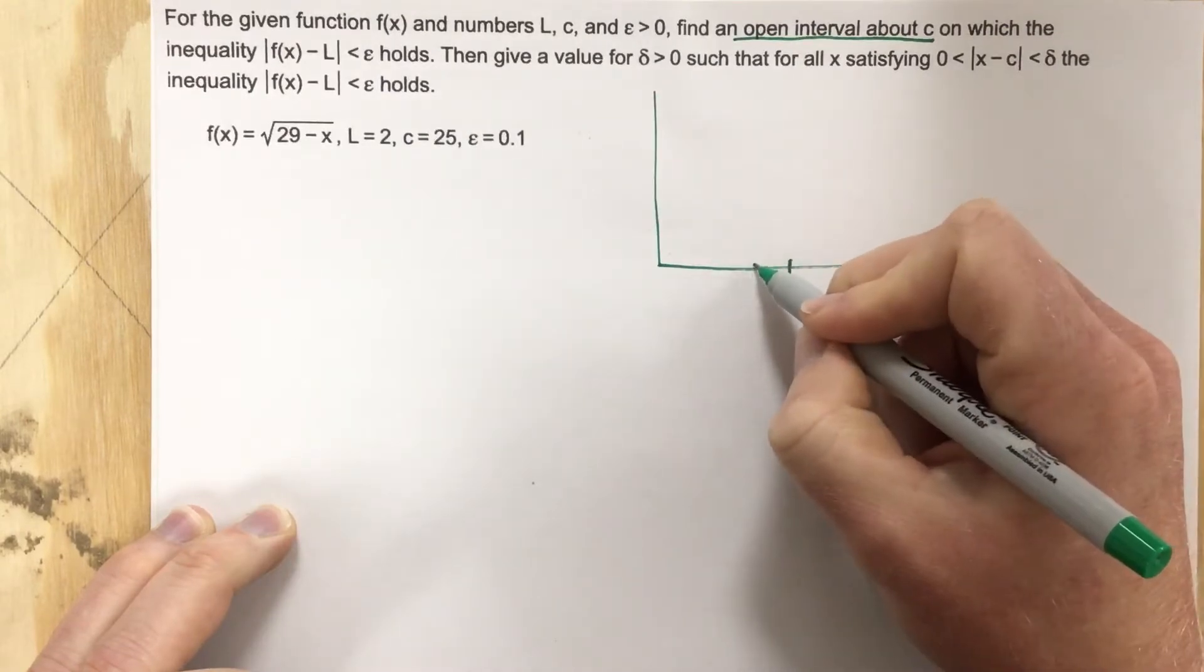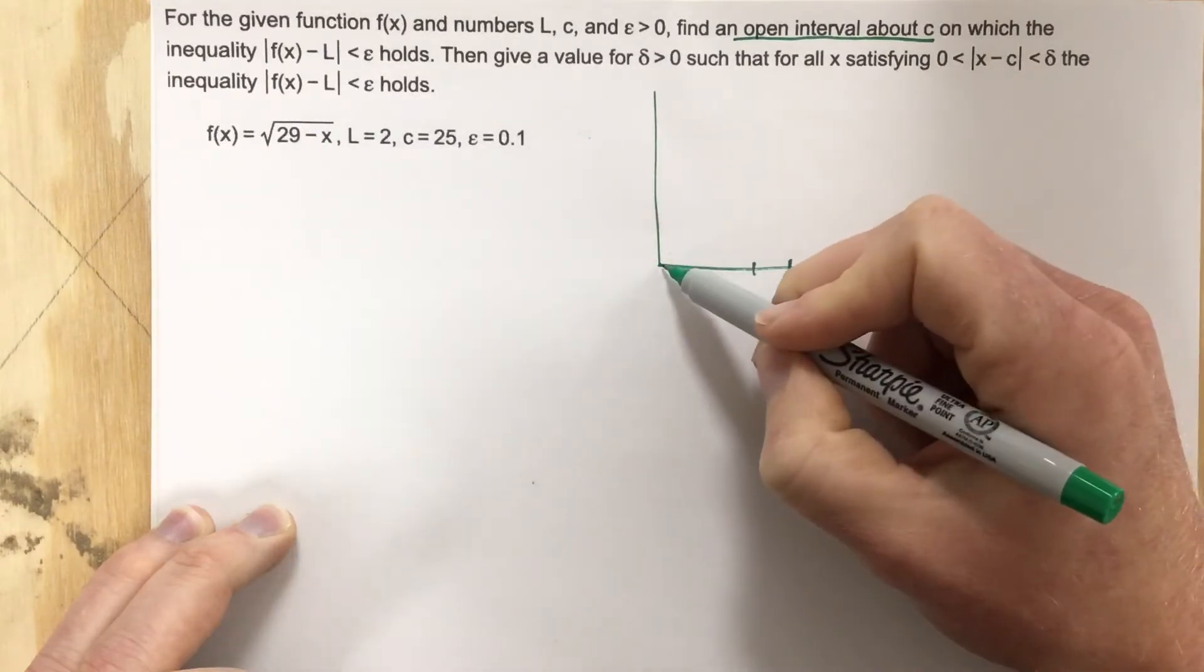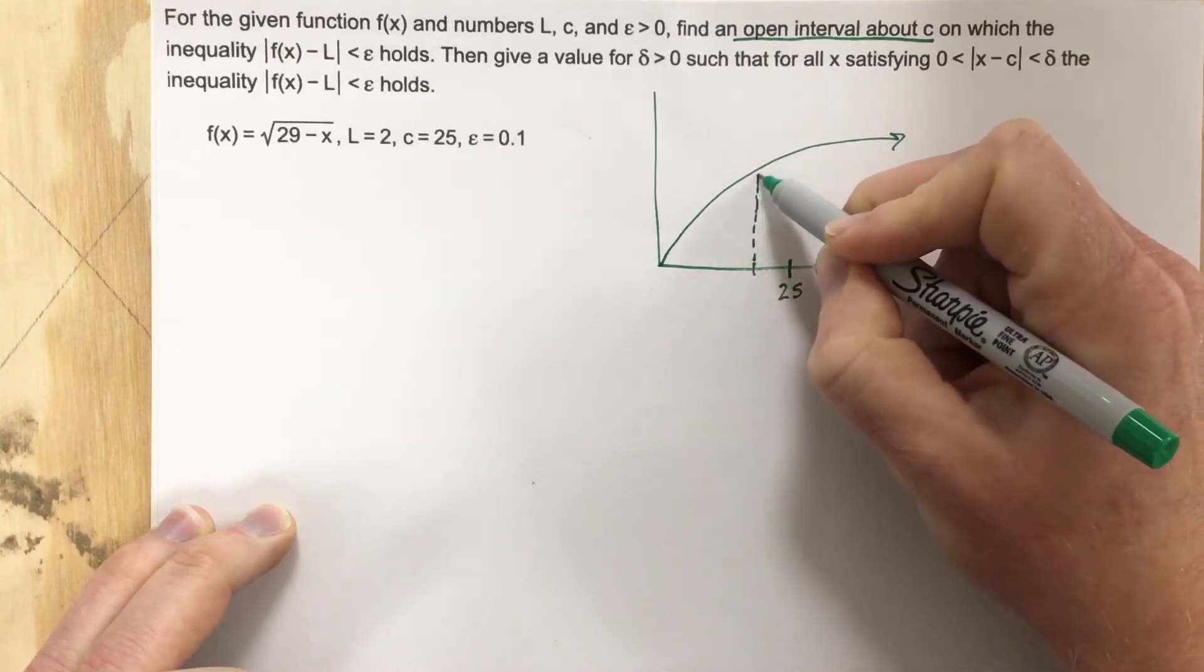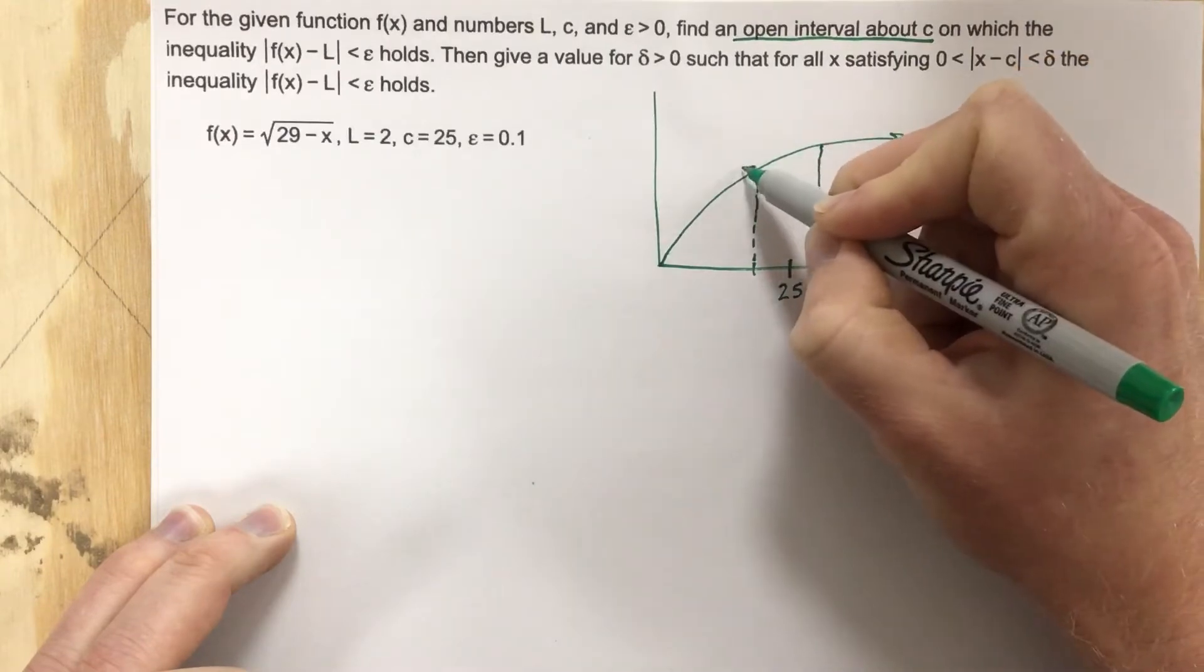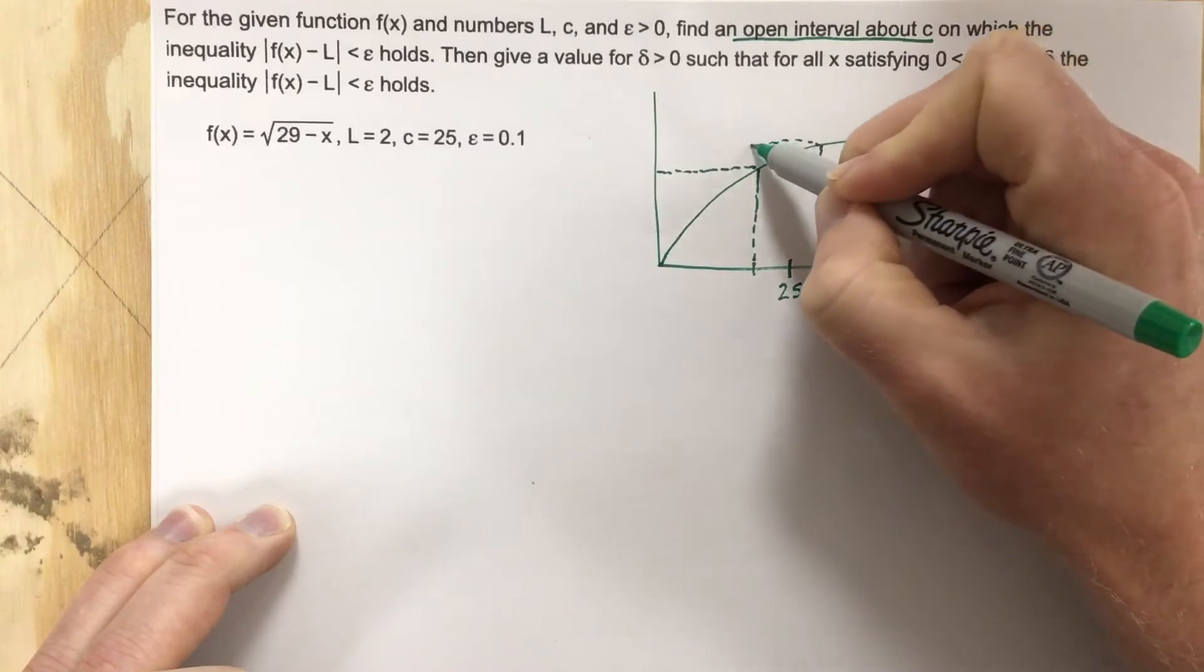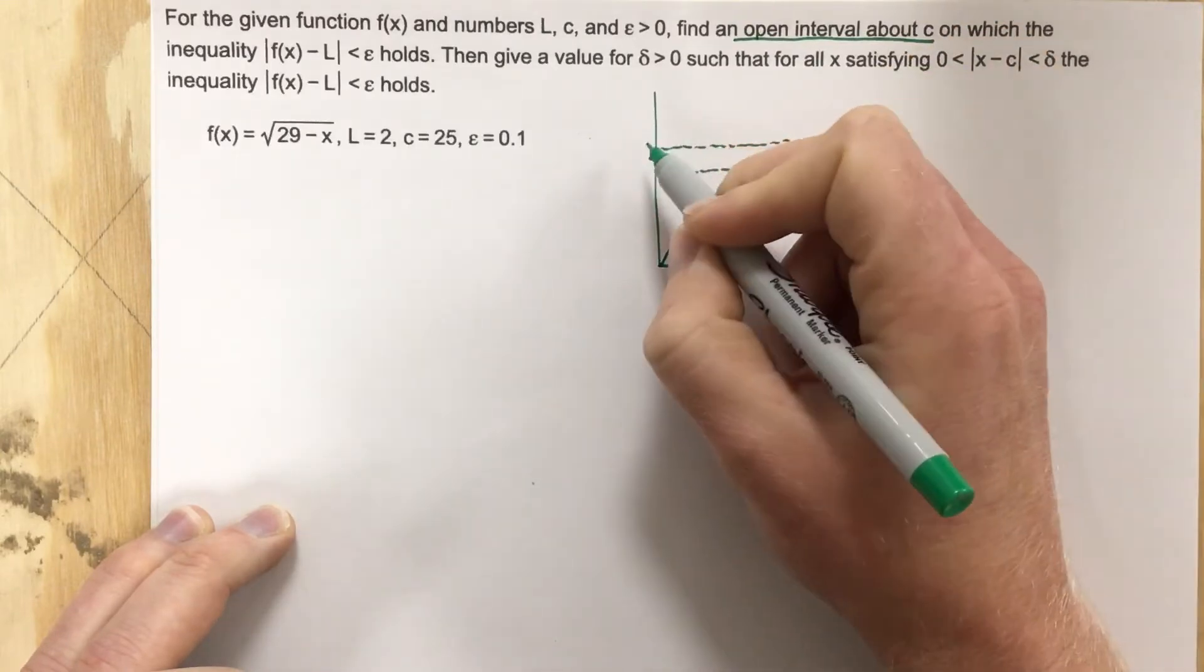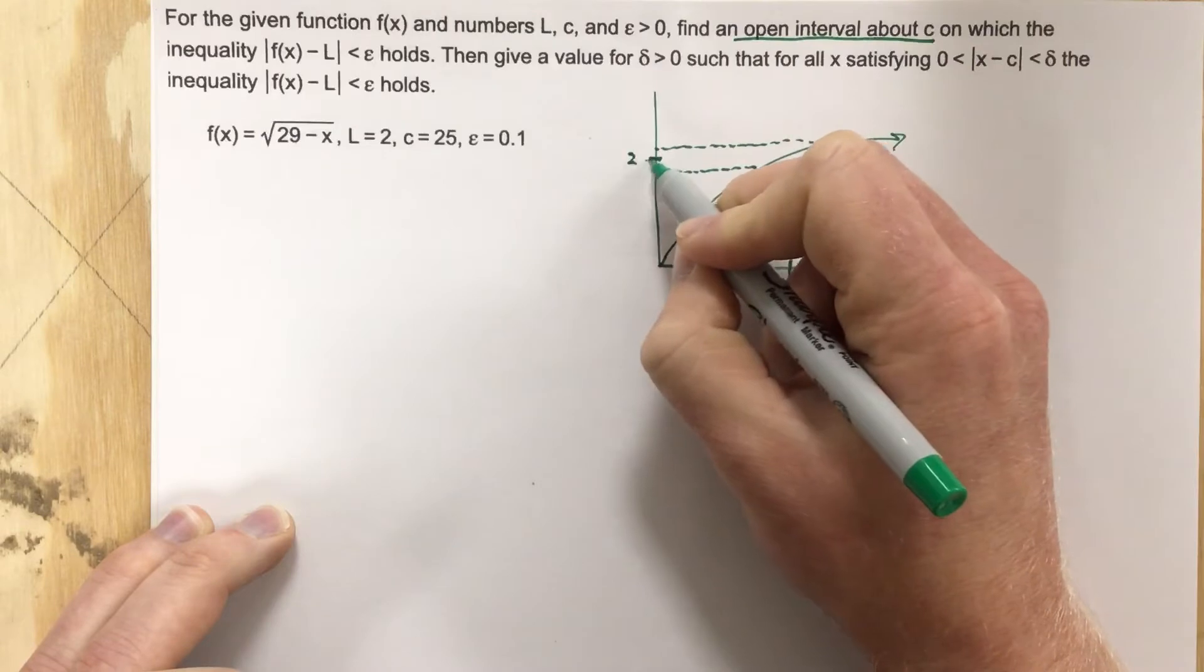They want us to find the x values that for the function, now this is a root function, so I'm just going to draw what it would look like. They want us to find the x values that will produce this epsilon value. They tell us the limit's 2, so this is 2 there.